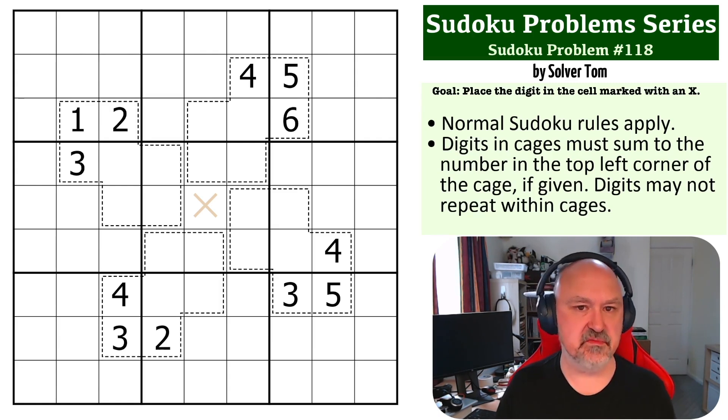So the digits in the cages must sum to the number in the top left corner of the cage, which if given, none are, and digits cannot repeat within cages.